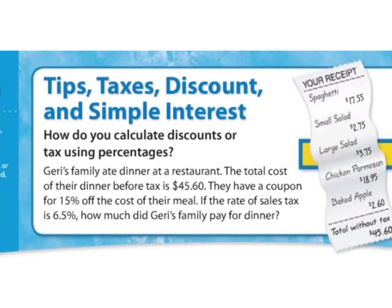Here's our first example for this lesson. How do you calculate discounts or tax using percentages? We're about to read a multiple-step word problem — it's a little more difficult than ones you'll be doing, but it is so useful as practice. Jerry's family ate dinner at a restaurant. The total cost of their dinner before tax is $45.60, but luckily they have a coupon for 15% off the cost of their meal.